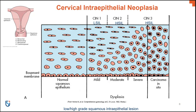Women with CIN 1, also known as low-grade squamous intraepithelial lesion (LSIL), have mild dysplasia and about an 11% chance of progression to carcinoma in situ. Women with CIN 2, or high-grade squamous intraepithelial lesion (HSIL), have moderate dysplasia and about a 22% chance of progression to carcinoma in situ. CIN 3, also a high-grade squamous intraepithelial lesion, means almost all of the cervical epithelial tissue shows cellular features of carcinoma, but the underlying basement membrane is not penetrated.